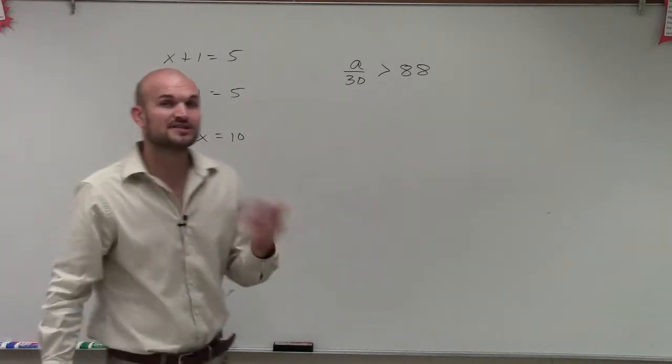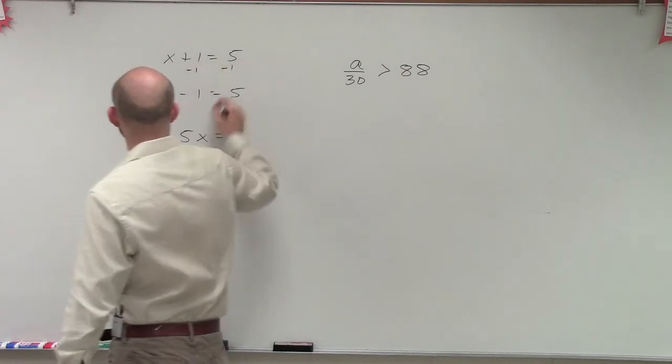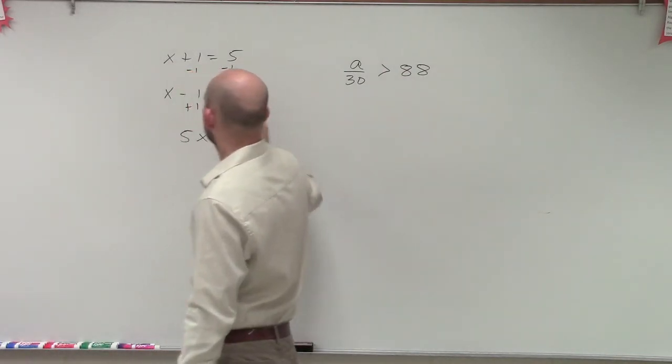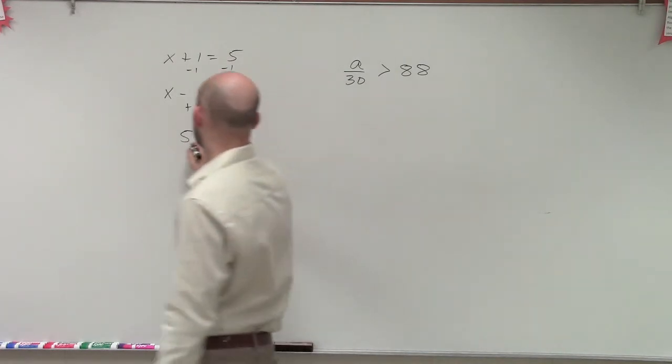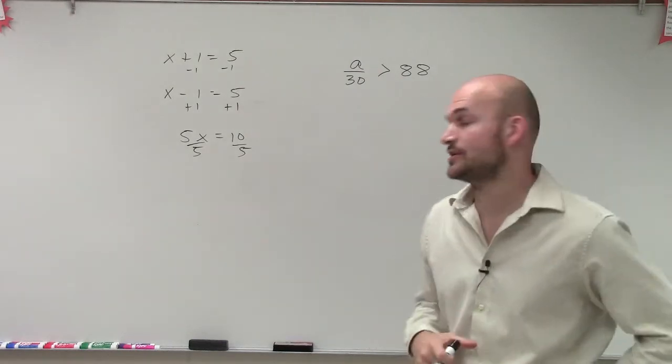So if I was going to solve any one of these equations, remember we used the inverse operation. So to solve for x here, I would subtract 1. Since my x is now being subtracted by 1, I would add 1. And here, since I'm multiplying by 5, I would divide by 5. Now these are very familiar inverse operations that a lot of us are used to.